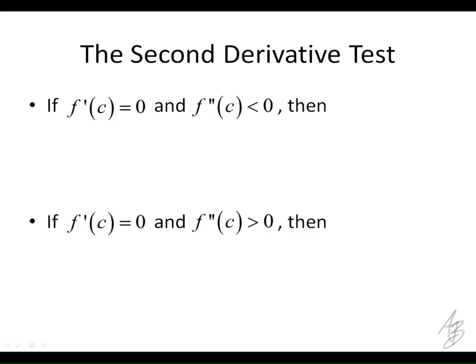Let's look at how we're going to do that. If the derivative is equal to zero and the second derivative is less than zero, let's think about what that means for the function. The derivative equals zero means it's a critical point — the slope is zero, so it's going to have a horizontal tangent. So we know that at point C, it's going to have a horizontal tangent.